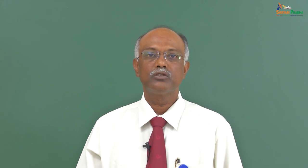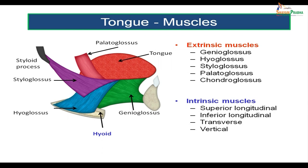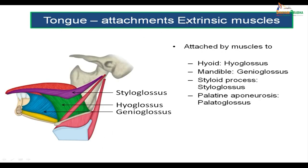The intrinsic muscles include the superior longitudinal, inferior longitudinal, transverse, and vertical groups. In this picture, the hyoglossus extends from the hyoid bone to the sides and posterior part of the tongue. The genioglossus extends from the genial tubercles on the posterior aspect of the front of the mandible into the tongue, forming the bulk of the tongue musculature. The styloglossus extends from the styloid process into the sides of the tongue, and the palatoglossus extends from the palatine aponeurosis into the sides of the posterior part of the tongue.